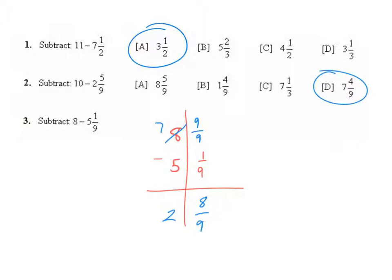Keep in mind that you can always check these answers by going backwards. If I want to go backwards, I should be able to do the inverse operation, which would be 2 and 8 ninths plus 5 and 1 ninth. I should get 8 wholes. So 8 ninths plus 1 ninth is 9 ninths, and 5 plus 2 is 7. 7 and 9 ninths does equal 8 wholes, so I have confirmed that my answer is correct.